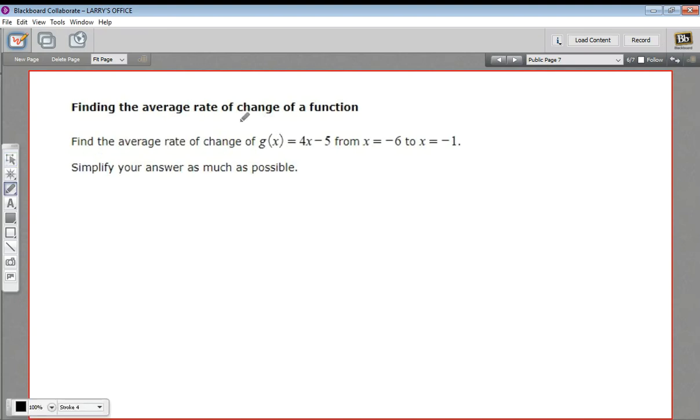In this problem, we're being asked to find the average rate of change of a function over some interval. In this case, the function is g of x equals 4x minus 5, and we're looking at it on this interval from negative 6 to negative 1.